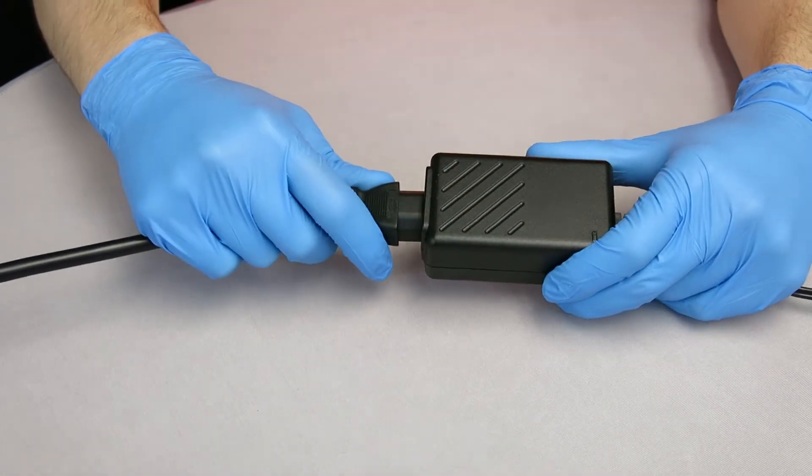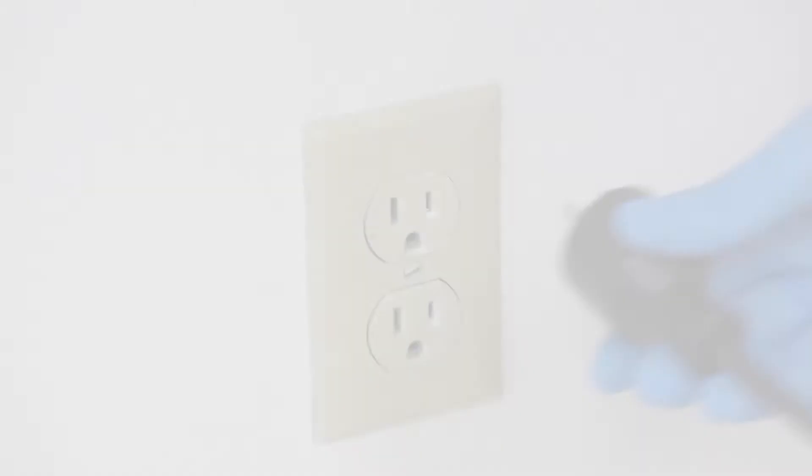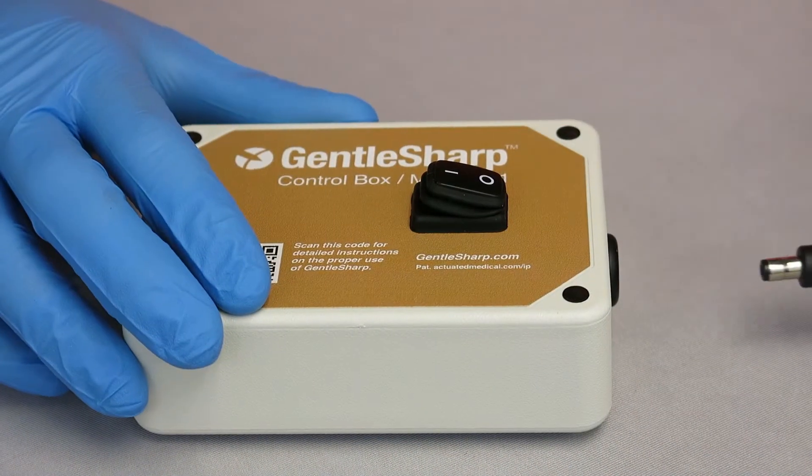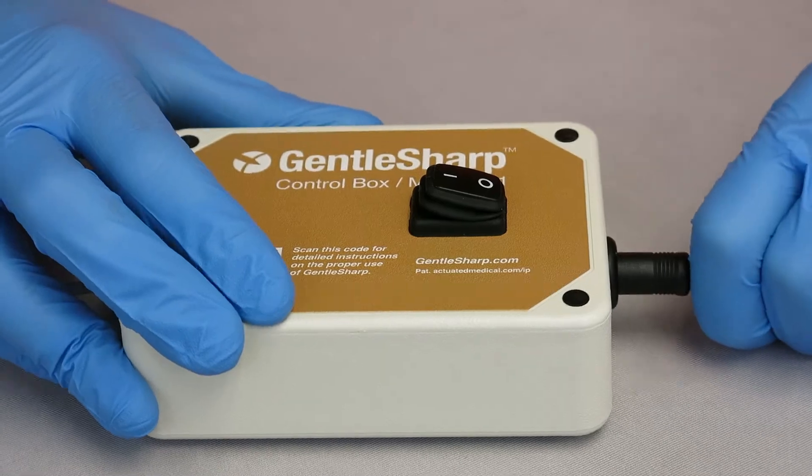Verify that the power cord is securely plugged into the power supply. Plug the power cord into a standard wall outlet. Plug the power supply into the jack on the control box.